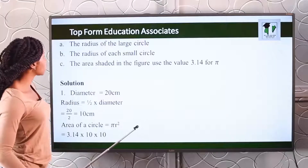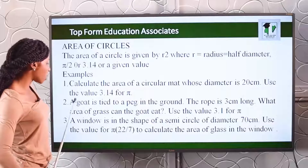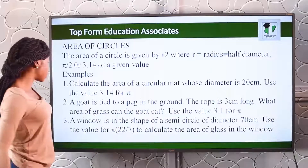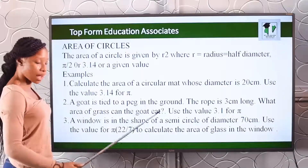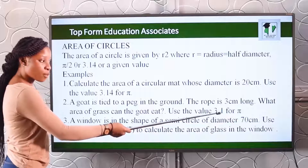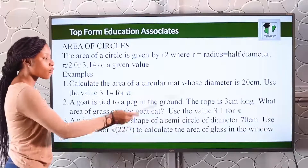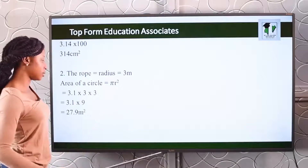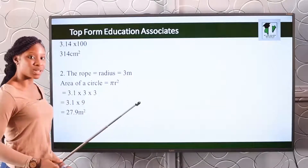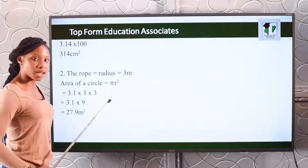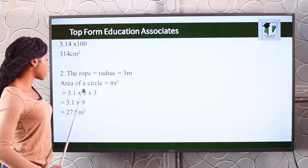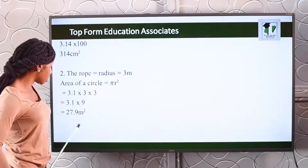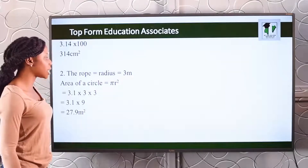Number two: a goat is tied to a peg in the ground. The rope is 3 centimeters long — what area of grass can the goat eat? Use 3.1, not 3.14, for pi. The rope, which is the radius, is 3 meters. Area of a circle is πr², with pi as 3.1. So 3.1 multiplied by 3 squared gives an area of 27.9 meters squared.